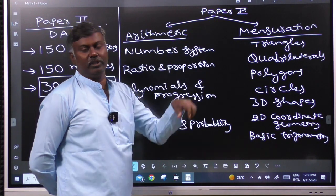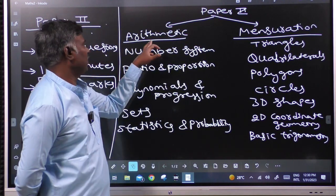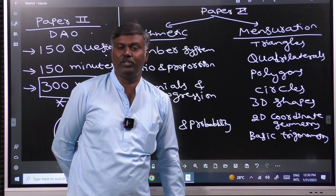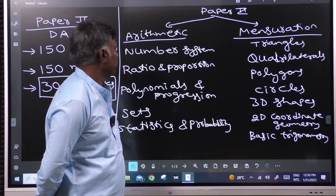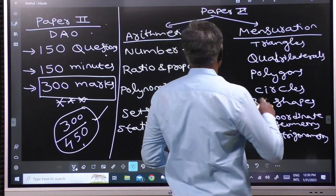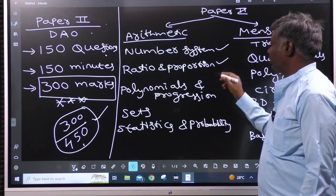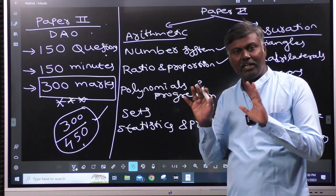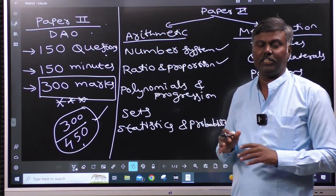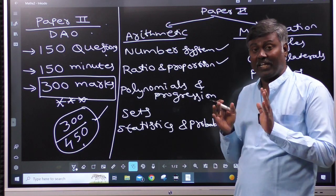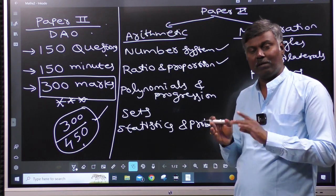This Paper 2 is divided by arithmetic and mensuration. Two parts split. Arithmetic includes number system, ratio proportion, time and work applications, time speed and distance.